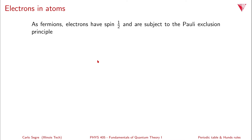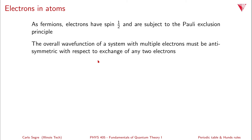Because electrons are fermions, they have spin 1/2 and are subject to the Pauli exclusion principle. This means that the overall wave function of a system with multiple electrons must be anti-symmetric with respect to exchange of any two electrons.